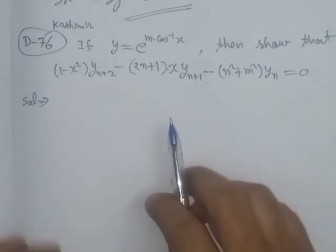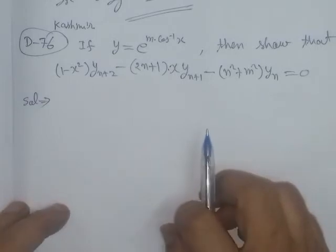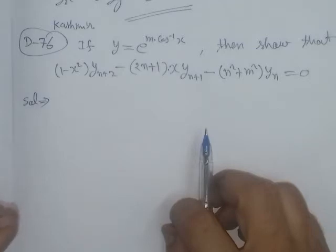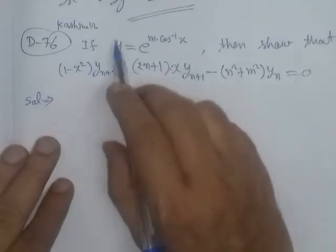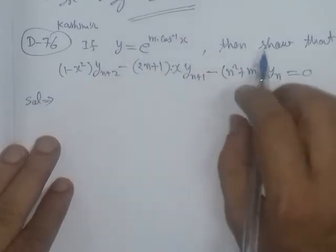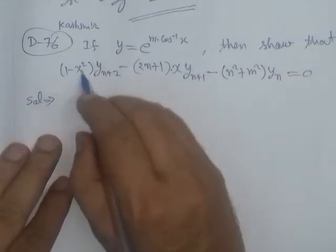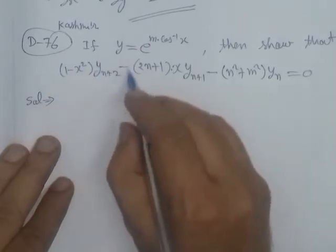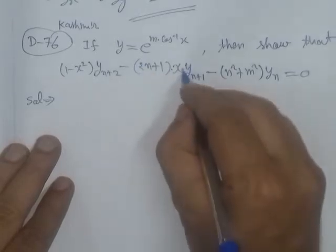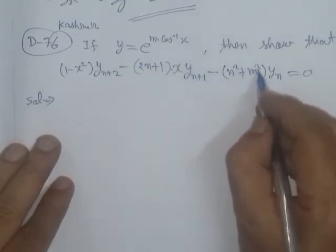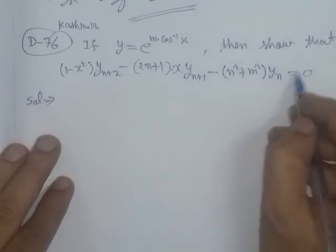Bismillahirrahmanirrahim. This problem is from differential calculus, successive differentiation, and here we will use the Leibniz theorem. If y is equal to e to the power m times cos inverse x, then show that (1 - x²) · yₙ₊₂ - (2n+1) · x · yₙ₊₁ - (n² + m²) · yₙ = 0.